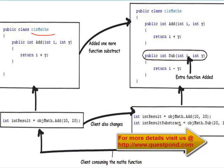Here is a simple CLSMaths class and this CLSMaths class has an add function. This CLSMaths class is consumed in a UI code. Basically you have created an object called objmath of CLSMaths and you are calling the add function and getting the results.